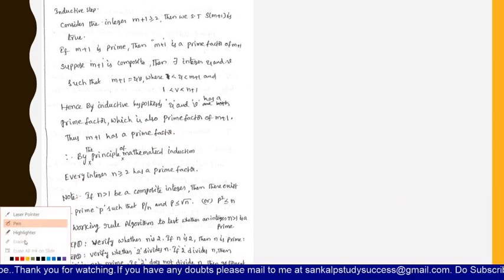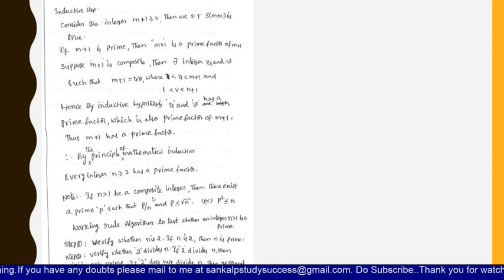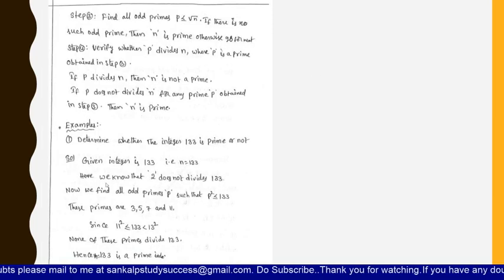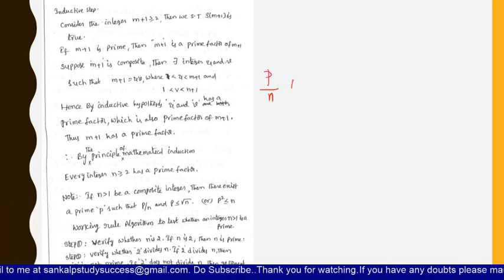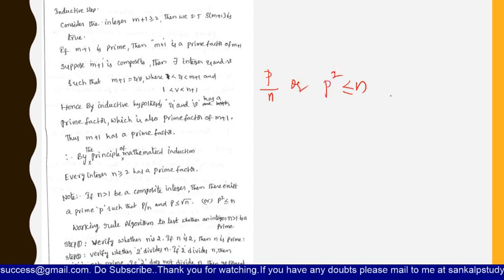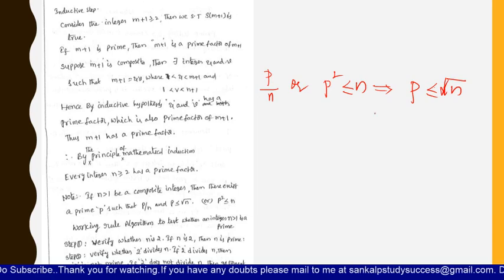Now let us see one more important theorem. If n greater than 1 is a composite integer, then there exists a prime factor p such that p squared is less than or equal to n, which we can also write as p less than or equal to the square root of n. Both are one and the same.